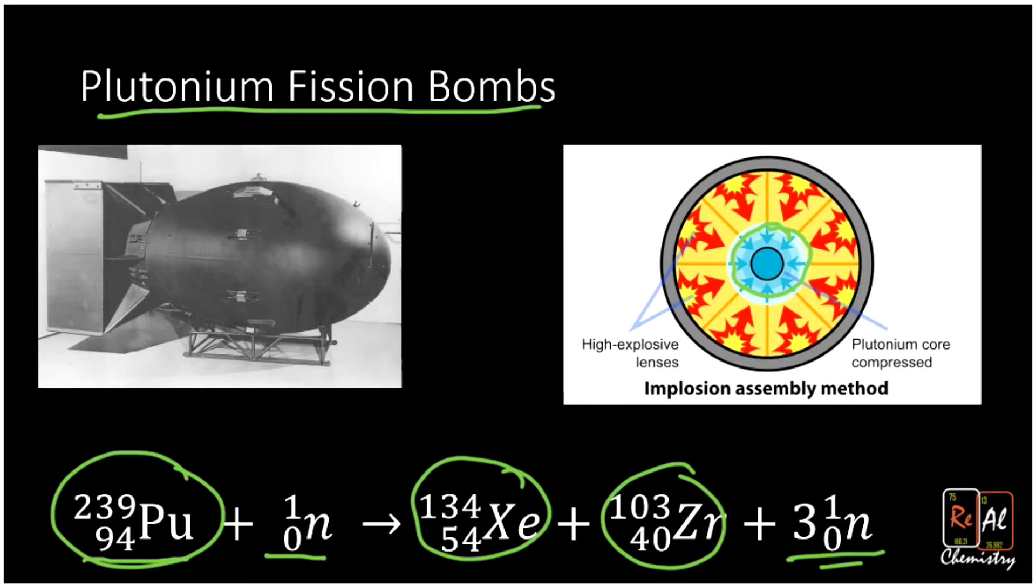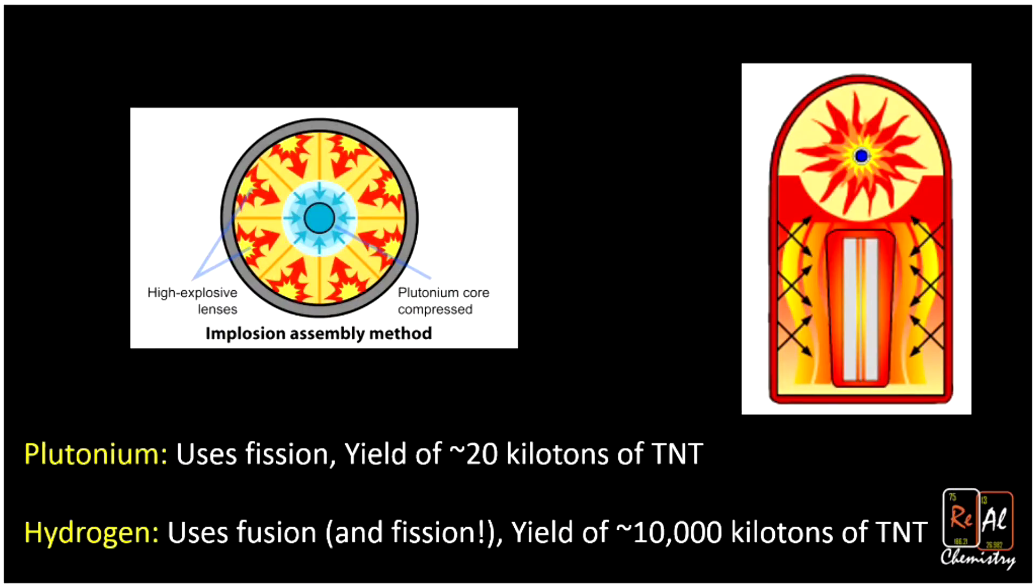The way you compress it is with a bunch of conventional explosives. So these are just old school explosives, and they're centered around that core. When they go off, that core is compressed to a higher density. And that's what ultimately makes this fission reaction begin. So when you compare plutonium fission bombs with our hydrogen bombs, they're pretty different. Plutonium uses fission, that is the falling apart of atoms.